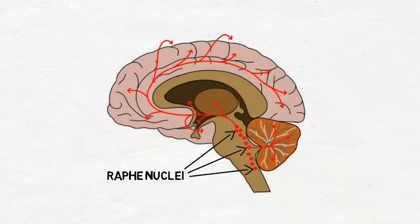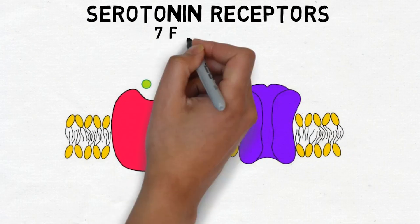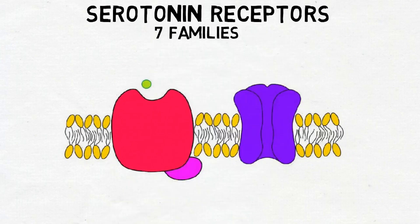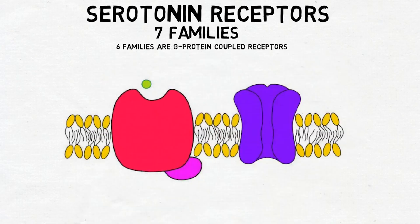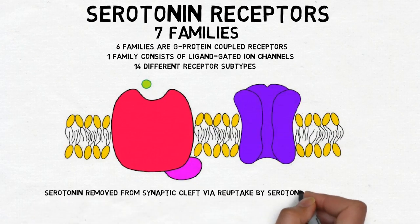Serotonin neurons from the raphe nuclei project throughout the brainstem and brain, and provide serotonin to the rest of the central nervous system. Researchers have identified seven different families of serotonin receptors, which differ from one another in distribution, the substances that bind to them, and the effects they mediate. All but one of these families consists of G-protein-coupled receptors; the other receptor family consists of ligand-gated ion channels. Within these seven families, 14 receptor subtypes have been identified. Serotonin is removed from the synaptic cleft by a transport protein called the serotonin transporter, or SERT.